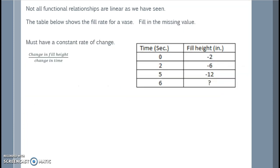The table below shows the fill rate for a vase. Fill in the missing value. This must have a constant rate of change in order for us to find that missing value. So we'll talk about the change in the fill height over the change in time.